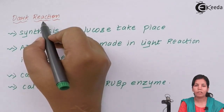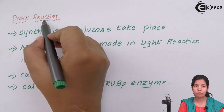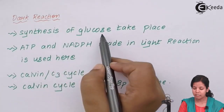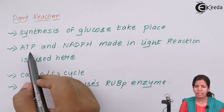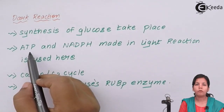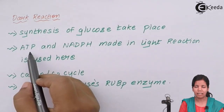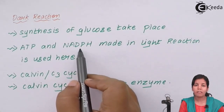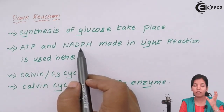Dark reaction is the reaction that takes place after sunset when the sun is not present. During dark reaction, synthesis of glucose — C6H12O6 — takes place. The energy needed for the dark reaction, in the form of ATP and NADPH, is obtained from the light reaction that takes place in the daytime. So the ATP and NADPH formed during the day is used at night for the dark reaction.